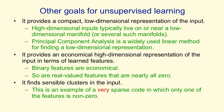In clustering viewed as a sparse code, we have one feature per cluster, and we insist that all features except one are zero, with that one feature having a value of one. So clustering is really just an extreme case of finding sparse features.